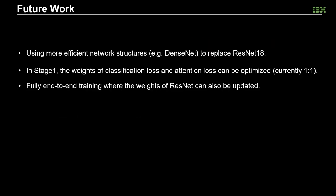There are several future directions regarding this work. First, currently in stage 1 we use ResNet-18 instead of any deeper network to balance between performance and GPU resources, although using more efficient network structures such as DenseNet can be explored in the future. Second, currently the weights for the classification loss and attention loss in stage 1 are the same, although these weights can be further optimized. Third, we can explore fully end-to-end training, where the weights of the ResNet can also be updated while training with the patient-level labeled data, which could hopefully bring further improvements.